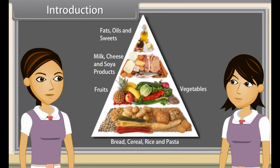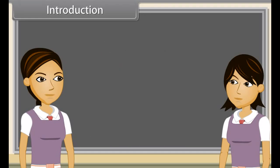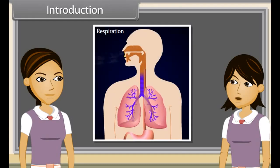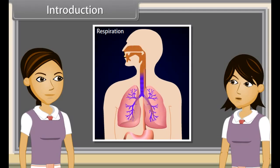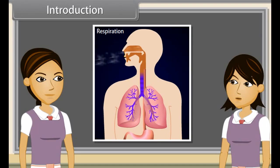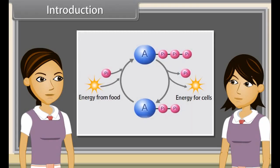Every living organism takes in food material by the process of nutrition, which provides energy for various life processes. Respiration is an oxidative process involving the oxidation of food substances such as carbohydrates, fats and proteins within the tissues to form CO2, water, and with the consequent release of energy. The released energy is temporarily stored as ATP.